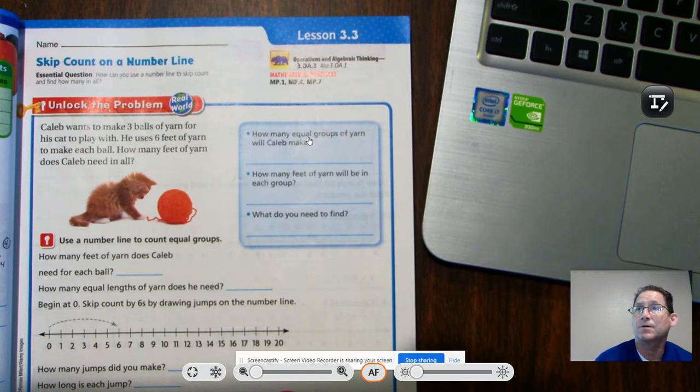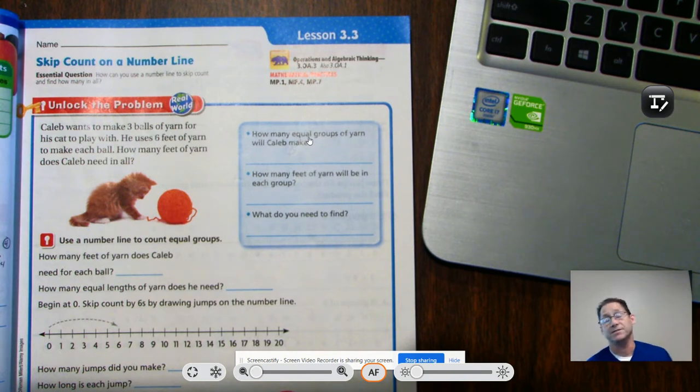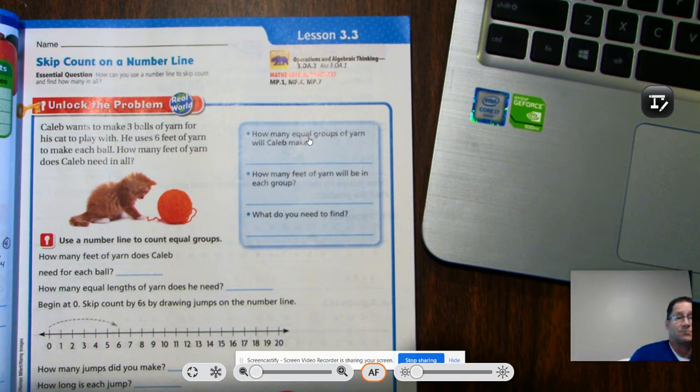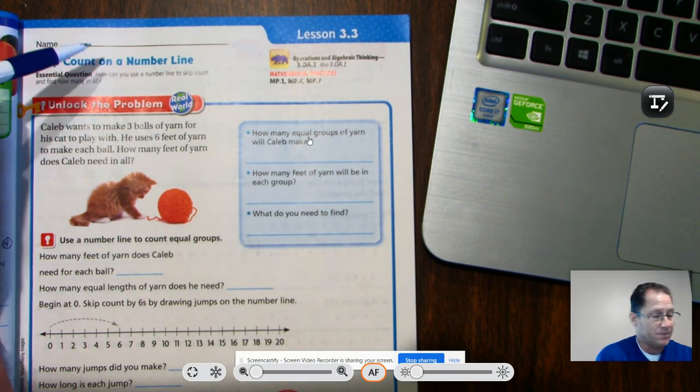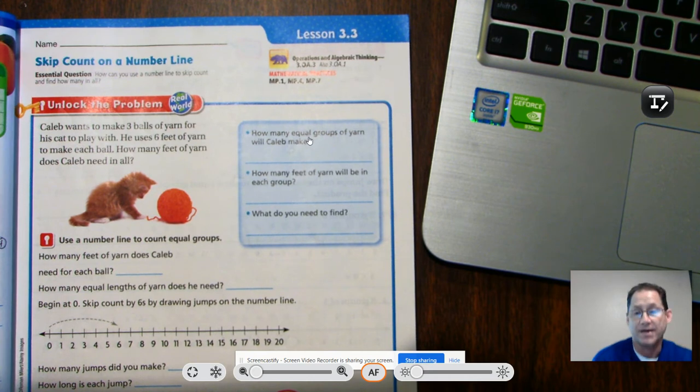So far we've talked about using counters and we've also used basically math facts where we write like three groups of 2 as 3 times 2. So today we're going to take that idea and we're going to use skip count on number line as a tool for solving or strategy for solving these multiplication problems. So our question is how can you use a number line to skip count and find how many in all?